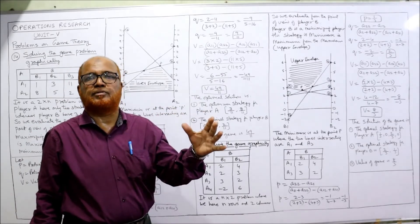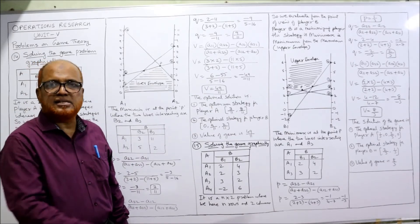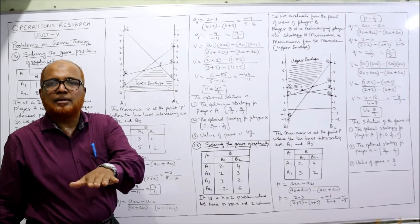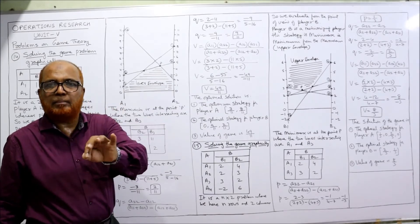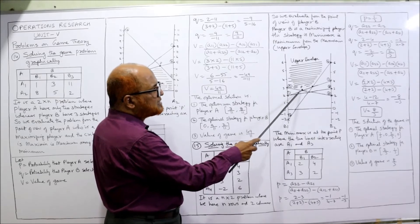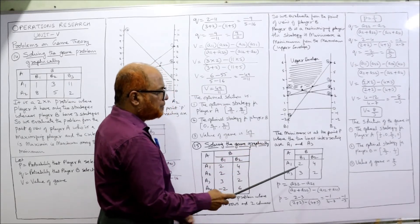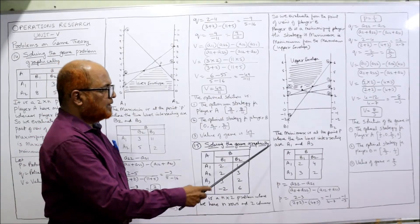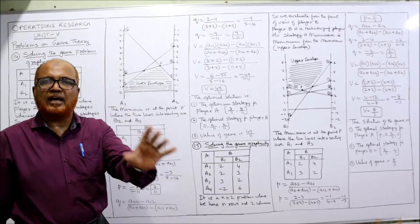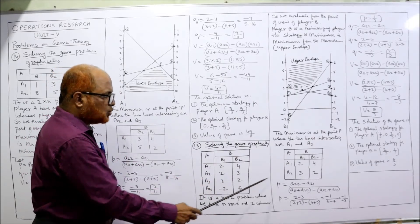We are concerned with minimax — minimum among the maximums — so we look at the upper envelope. In the upper envelope, two intersection points are visible. Since our strategy is minimax, we select the minimum of these two points, which is point P. The two lines intersecting at P are the first line and the third line, corresponding to A1 and A3. So we remove A2 and A4. The reduced 2×2 matrix is: A1=(2, 4) and A3=(3, 2) against B1 and B2.